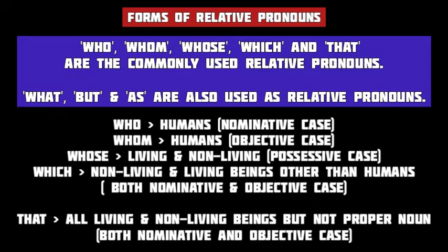While 'who' is used as the subject of the relative clause, 'whom' is used as the object. The relative pronoun 'whose' is used for all living and non-living beings and is always in the possessive or genitive case — indicating the possession or ownership of its antecedent. The relative pronoun 'which' is used for all non-living and living beings except human beings. 'Which' can be used both as the subject or the object of the relative clause.